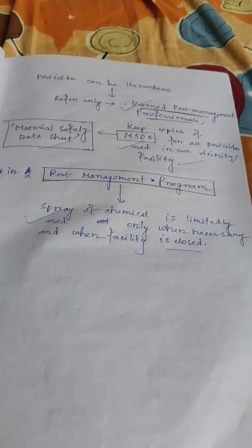Stored product pests include three types of beetles and one moth. The three beetles are: flour beetle, cigarette beetle, and sawtooth grain beetle. The moth is the Indian meal moth.